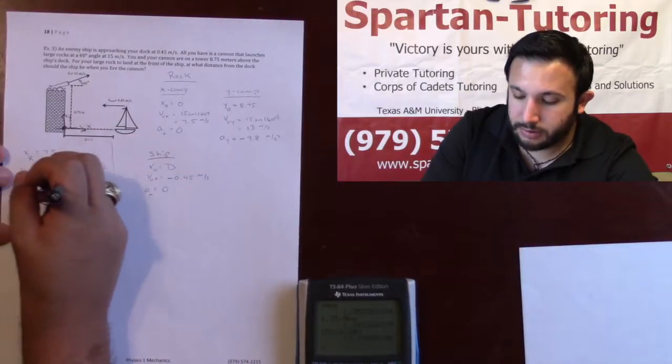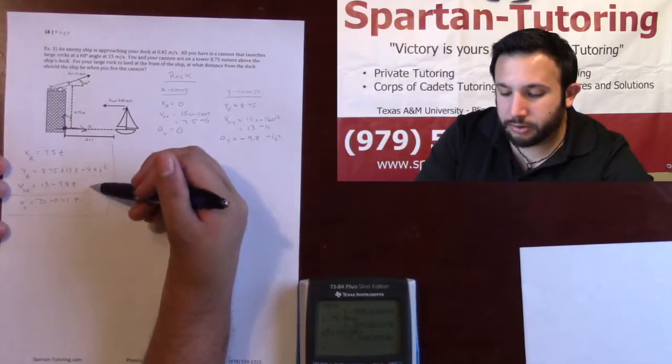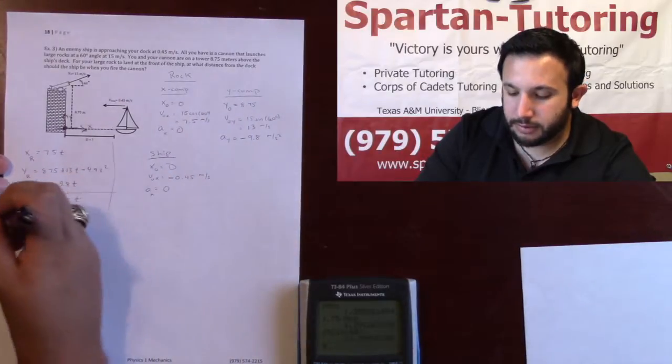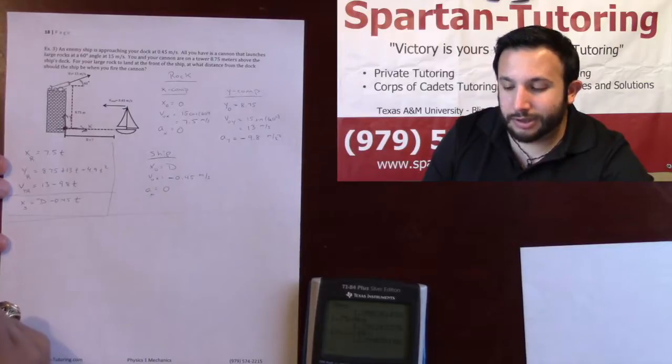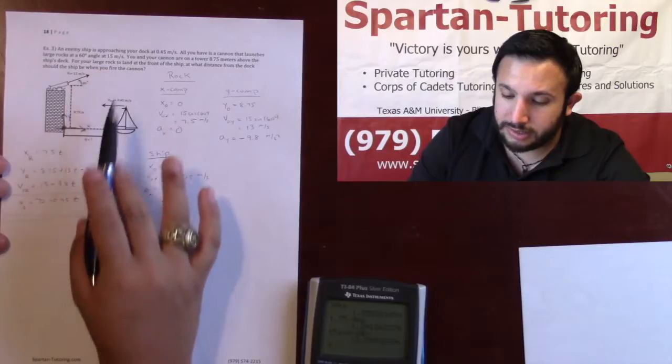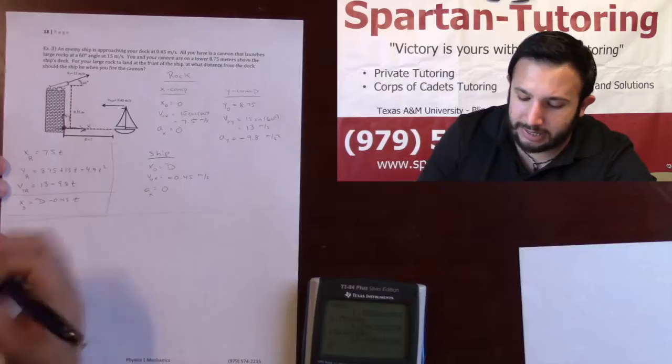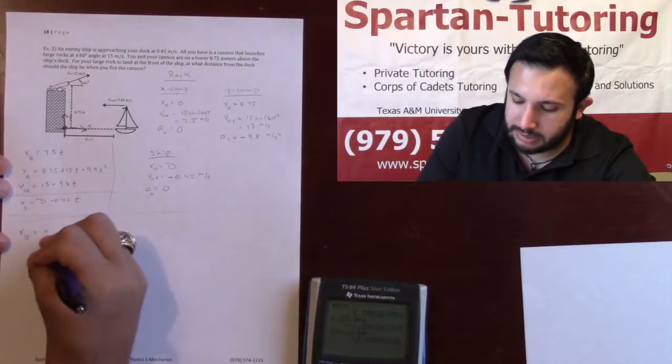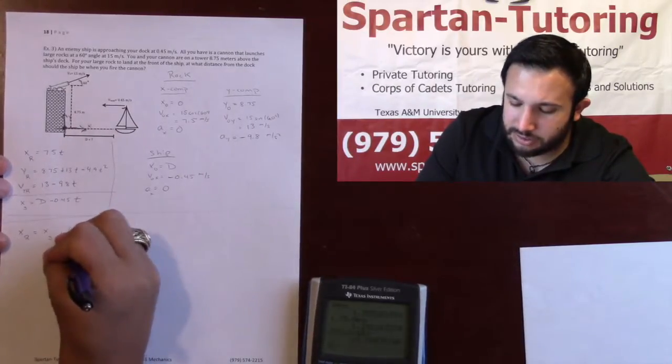These are four equations that we're going to be utilizing. The top three equations deal with a rock, this one deals with the ship. Now that I have this set up, now let's really read the question and understand what it's asking for. It says for the large rock to land in front of the ship, at what distance from the dock should be fired. So what I need is I need the x of the rock to equal the x of the ship, and basically this needs to occur when the y of the rock is zero.